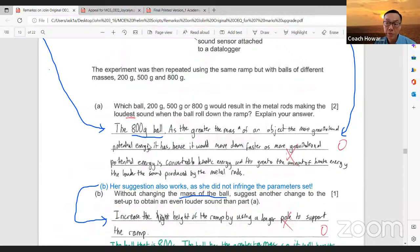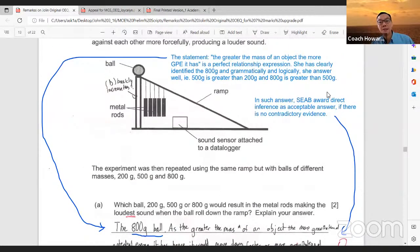I'm not appealing for this 800 grams mark because I understand the current PSLE marking protocol. If explanation is required, although the student present the right choice, but the explanation doesn't fit, no marks will be given. If you can examine carefully the statement, the greater the mass of an object, the more GPE or gravitational potential energy it has. It's a perfect relationship expression. She has clearly identified the 800 grams and grammatically and logically, she answered well.